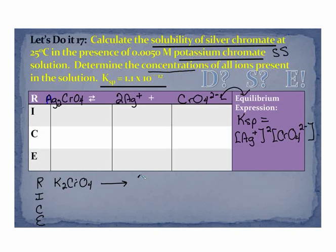K₂CrO₄ dissolves its soluble 100% to give two potassium ions plus chromate ion. Now that is a stoichiometry. So this is 0.0050 molar. None of that initially. We're talking about that picosecond before it's had a chance to dissolve.